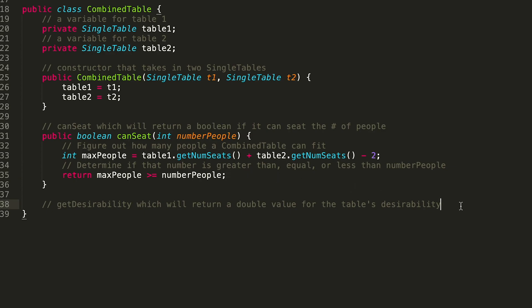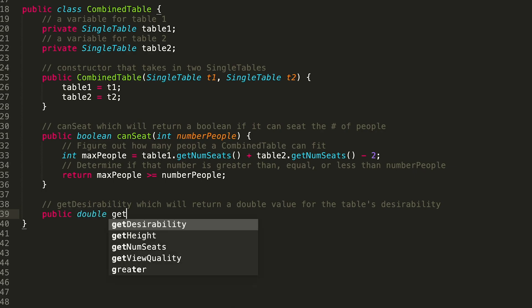Lastly, we have getDesirability. Each table has a view quality, and we use that along with the table height to determine desirability. The method header is: public double getDesirability(). Nothing is passed in — this is purely a getter.